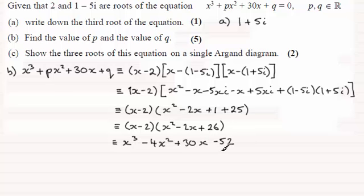And then you've got minus 2 times the 26 which is minus 52. And so when I compare this then to what we've got up here, I can see that p, the coefficient of x squared, is going to be minus 4, and q is the constant on the end which is minus 52. So there's our values for p and q.